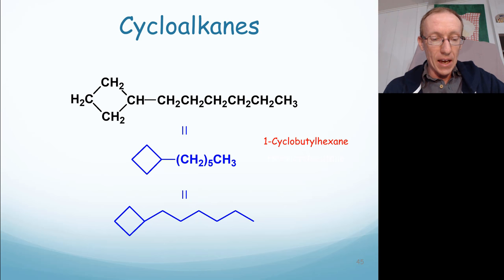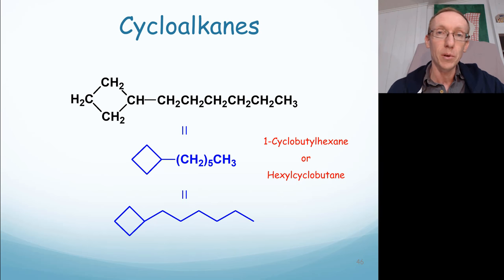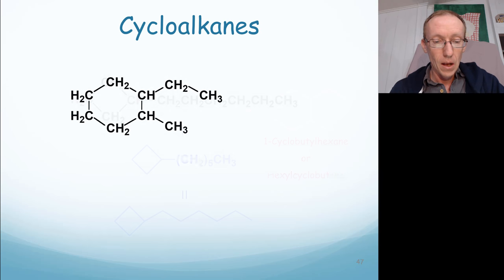It can either be a cyclobutyl group attached to a hexane, so it's 1-cyclobutylhexane, to show that the cyclobutyl group is attached to the hexane at the one position of that hexane chain. Or it's a hexylcyclobutane. And now this one doesn't need a number because the cyclobutane, no matter where we put the hexyl group, there's only one substituent on that ring. And because the ring is symmetrical, we don't need a number.